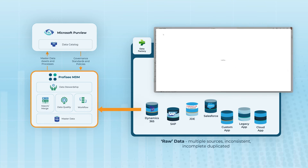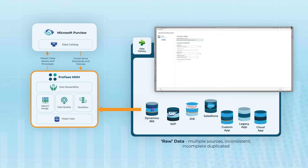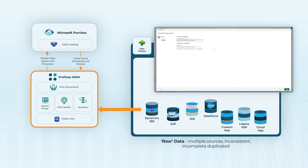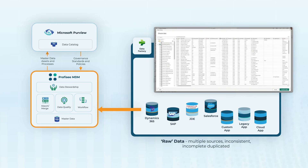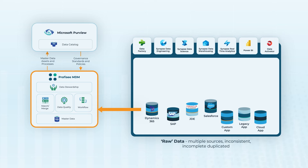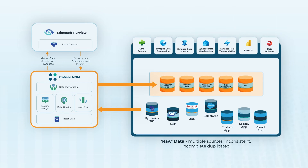Prophecy is pre-integrated with Microsoft Fabric, and we should note it is the only MDM to have connectors shipped with Fabric. So we can easily access the master data from all the source systems and cycle it through our data refinery, and publish matched, merged, standardized, and verified data back to Microsoft Fabric. When combined with transactional data from the original source, the result is what we can think of as a consumable data product, or gold medallion data.